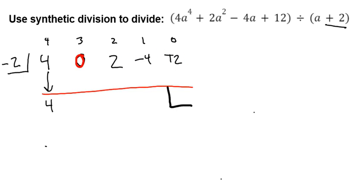Here we go: negative 2 times positive 4 gives me negative 8. 0 plus negative 8, because remember you're adding these two things, gives me negative 8. I'm going to multiply negative 2 times negative 8, gives me positive 16.